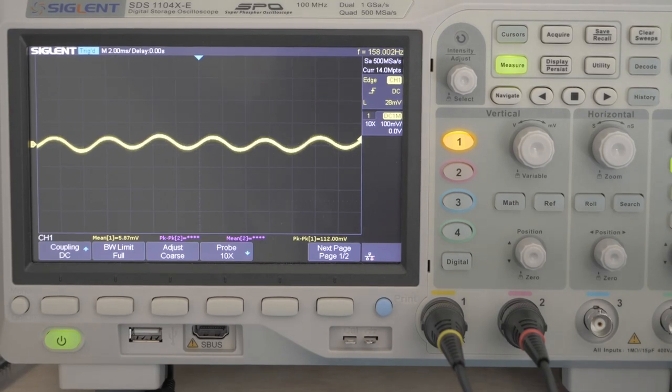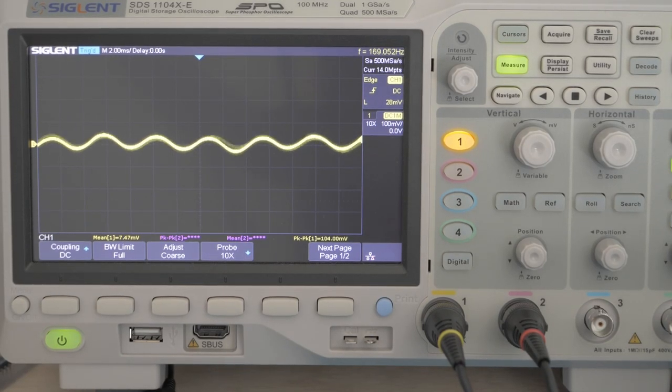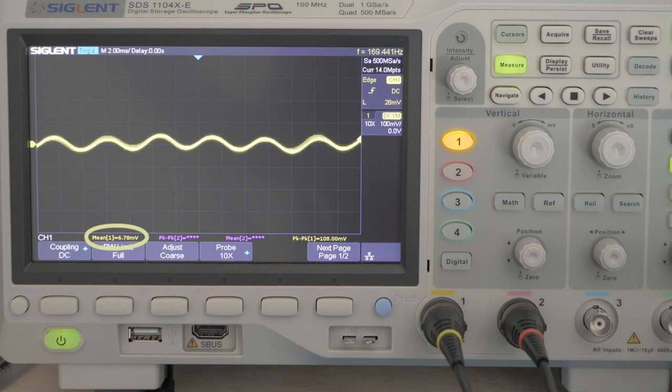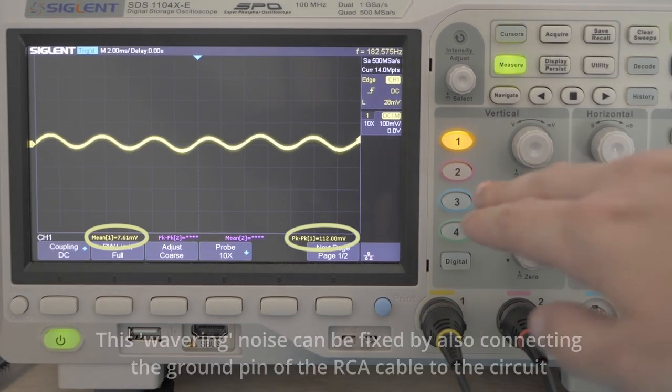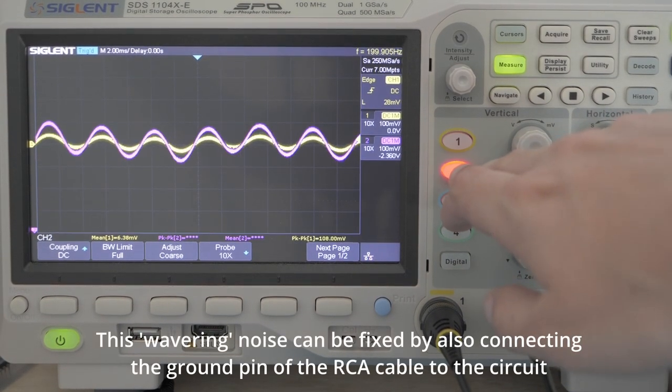As you can see, the input signal in yellow is oscillating around 6 millivolts, with a peak-to-peak of about 100 millivolts. If I turn on the second channel connected to the op-amp's output pin, you can see that the op-amp is outputting the same exact signal as the input,